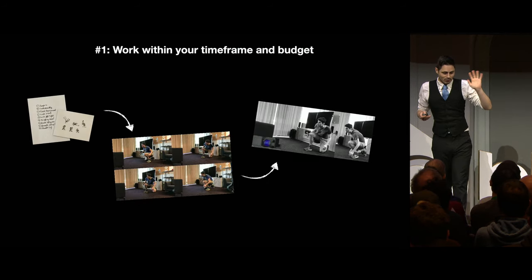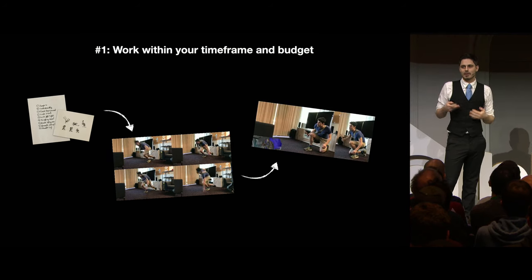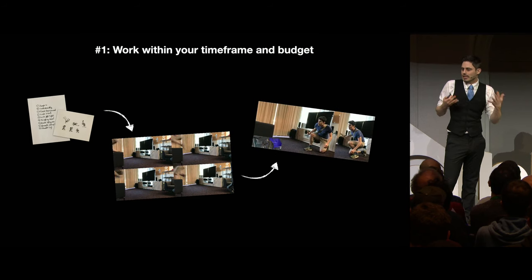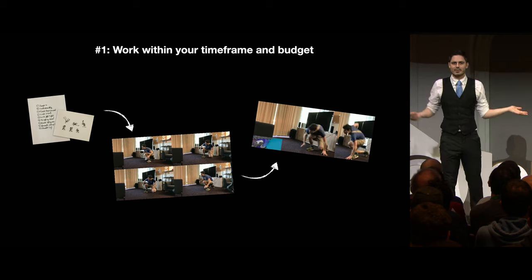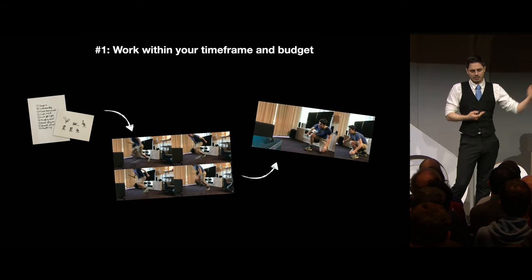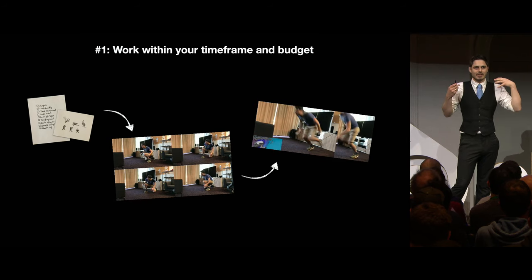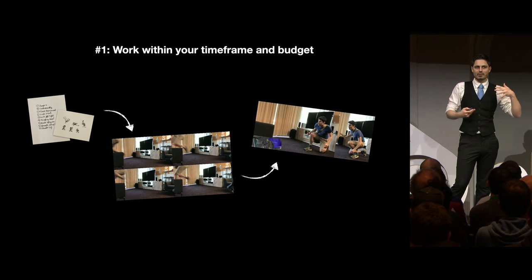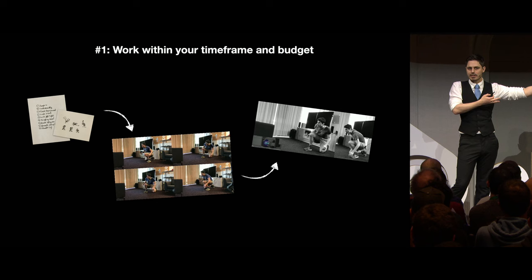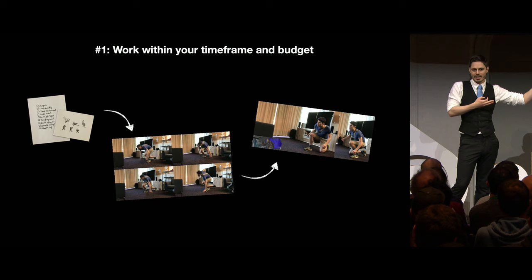Tip one, and this is probably the most important one, is try to work within your time frame and budget. Realistically, you're not going to be given three weeks to perfect performances and then present to the director. You're going to be given maybe a day. But that's kind of the point — it's supposed to have a fast turnover. You make it, you look at it together with the director, you find out that choice is great, that choice doesn't work at all when put in the edit.